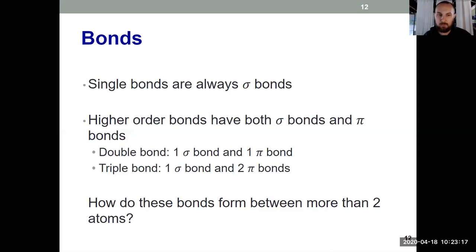In this video, all we've been thinking about is two atoms coming together. The next question we're going to answer in video two is how do bonds form between more than two atoms with a lot of the Lewis structures that we've seen in the past.